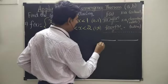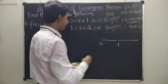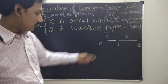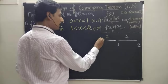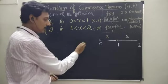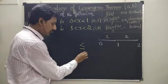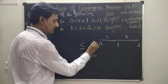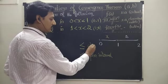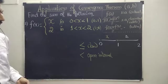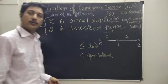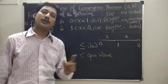The function is defined from 0 to 1 as x, and from 1 to 2 as the constant 2. These endpoints are not included — it is strictly less than, which means open interval. Strictly less than means open interval, so the point is not included. What about 2? 2 is also not included. So 0, 1, and 2 are all points of discontinuity.